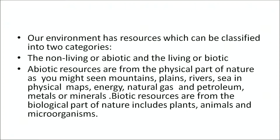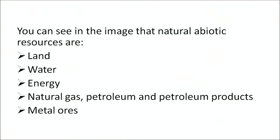Abiotic resources are from the physical part of nature — mountains, plains, rivers, seas, energy, natural gas and petroleum, and metals or minerals. Biotic resources are from the biological part of nature and include plants, animals, and microorganisms. Natural abiotic resources are land, water, energy, natural gas, petroleum and petroleum products, and metal ores. Let us understand the role of each of these abiotic natural resources in shaping human society.